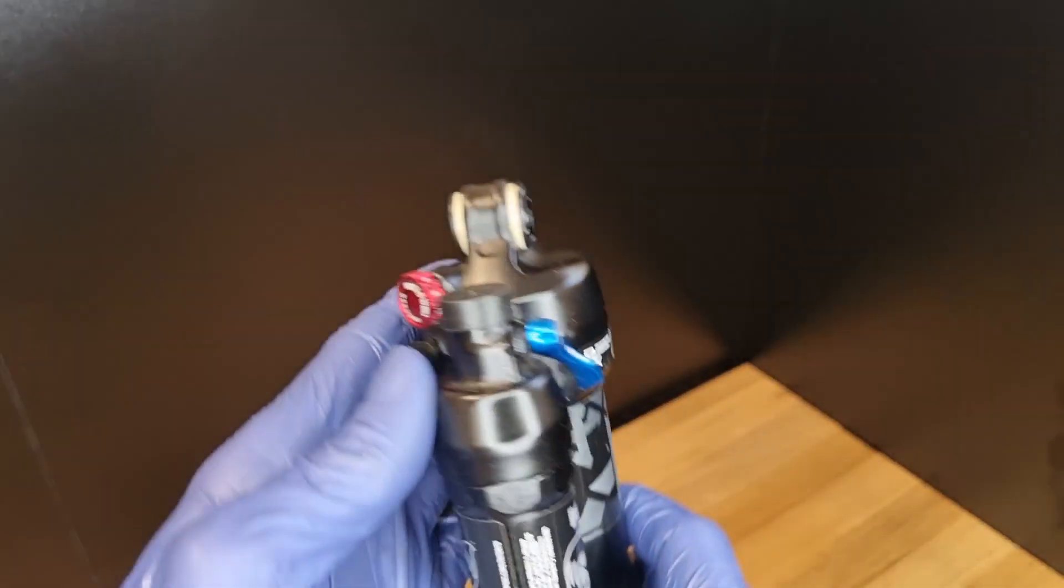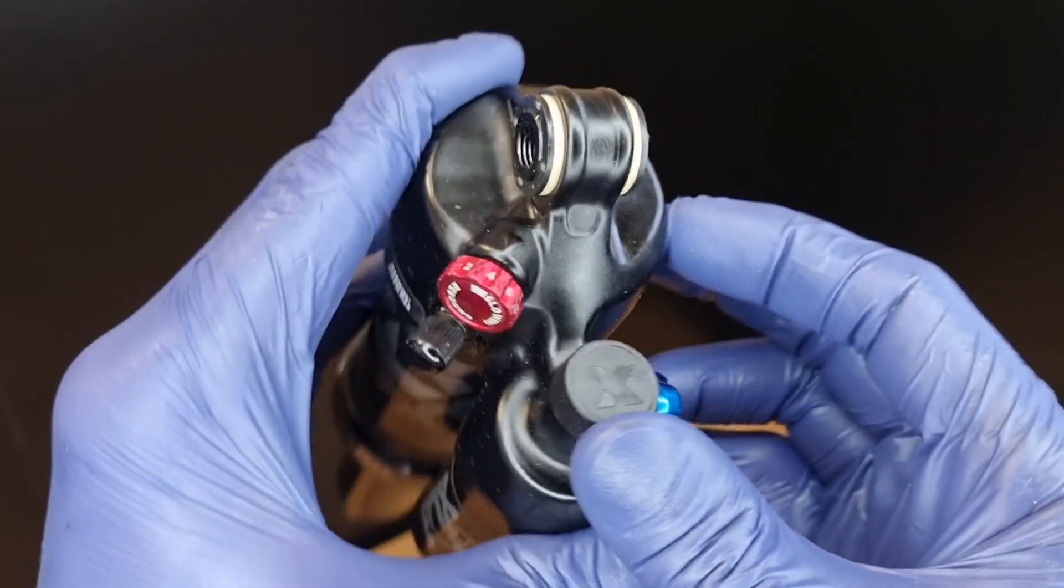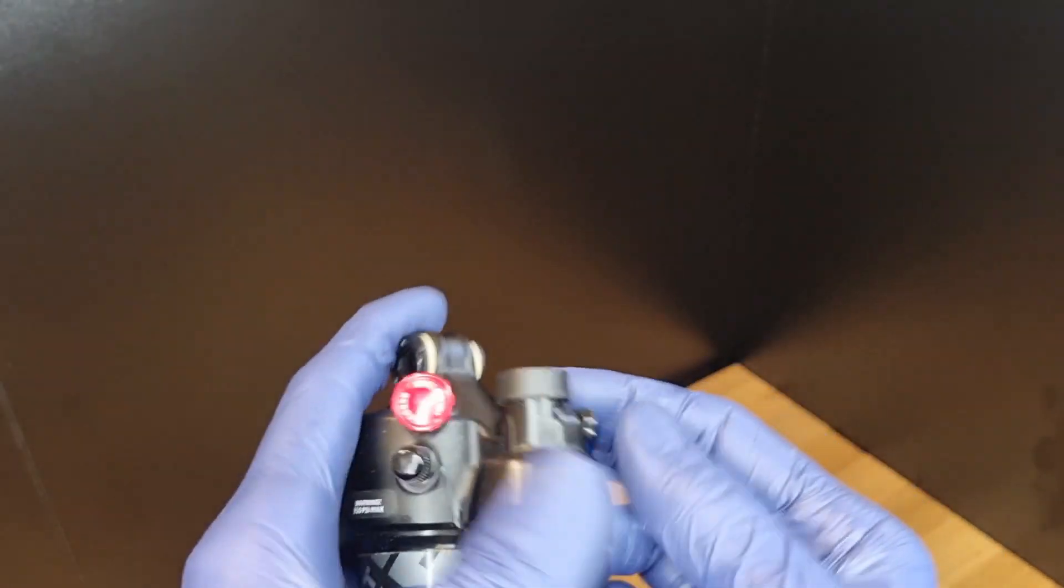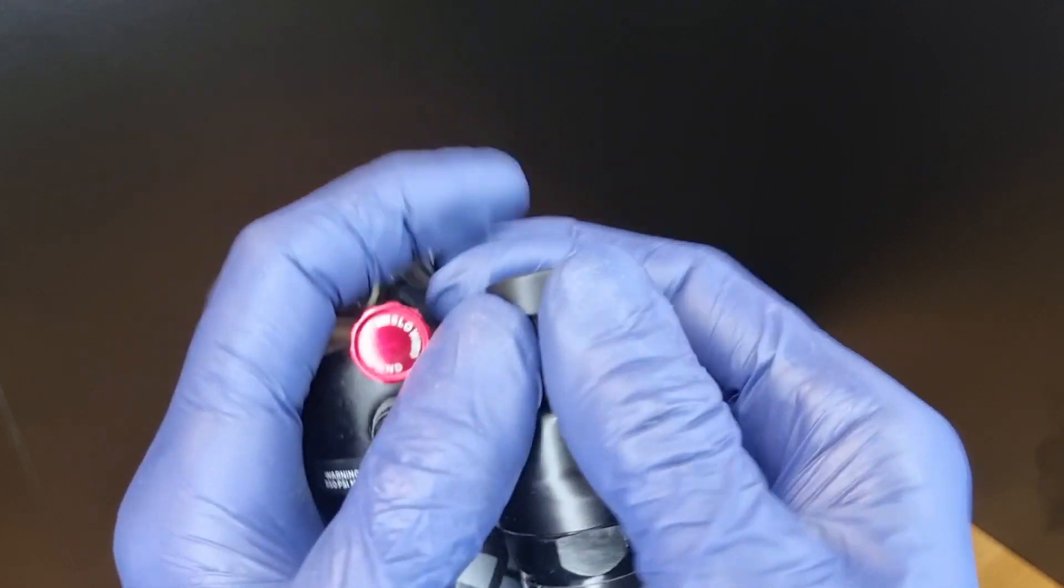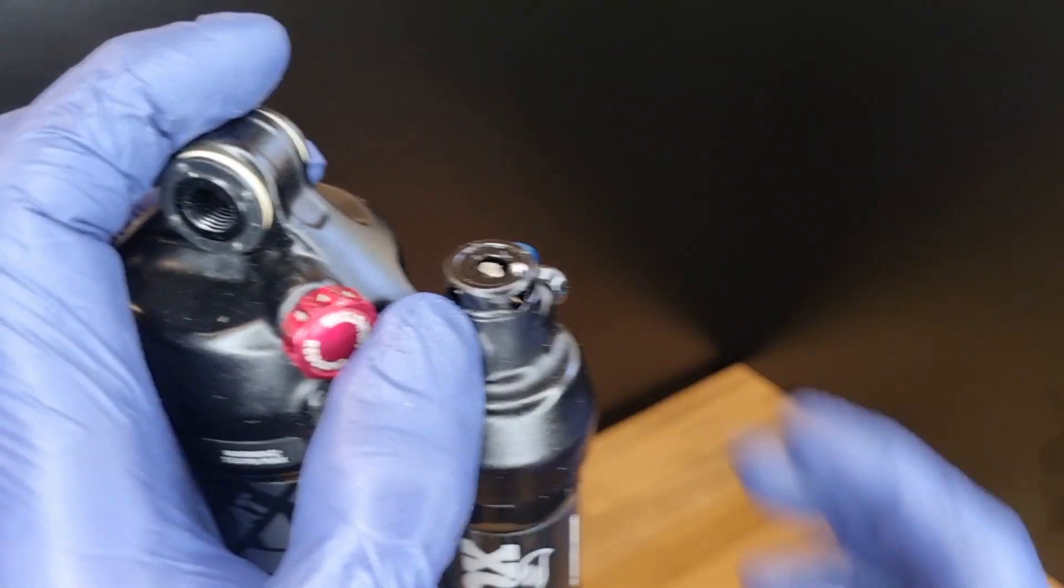Here's how to upgrade your Floatax and DHX with the new low speed compression adjuster. We'll need to pop this cap off to show the interface for the adjuster and detent ball.